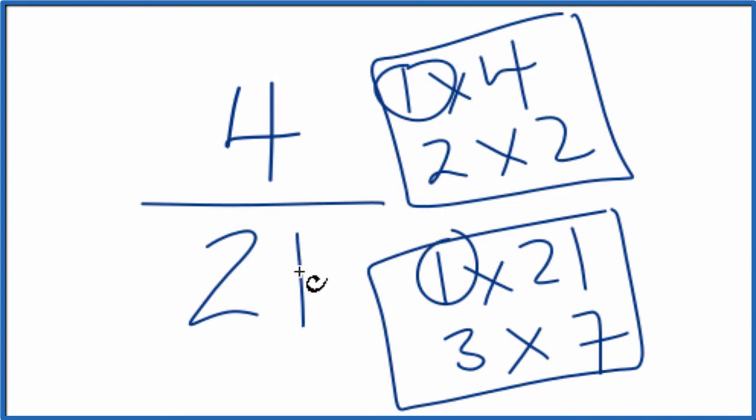Because of that, 4/21 is already simplified. We can't reduce or simplify this any further. If you divide 4 by 1 and 21 by 1, you get 4 over 21.